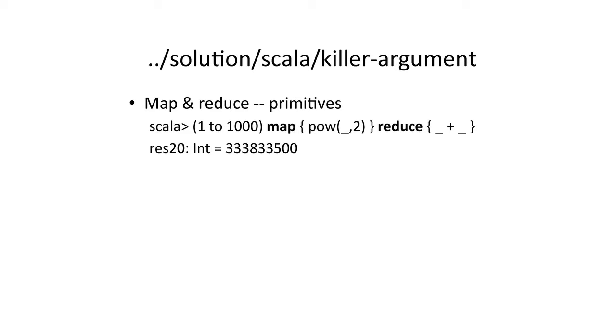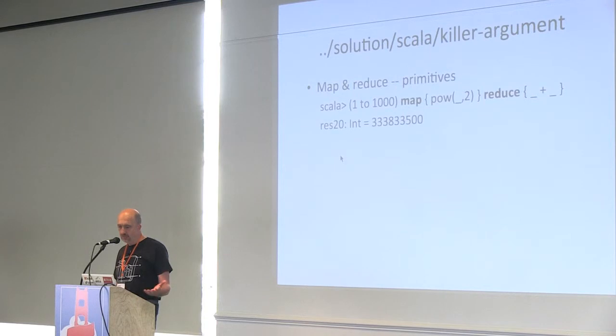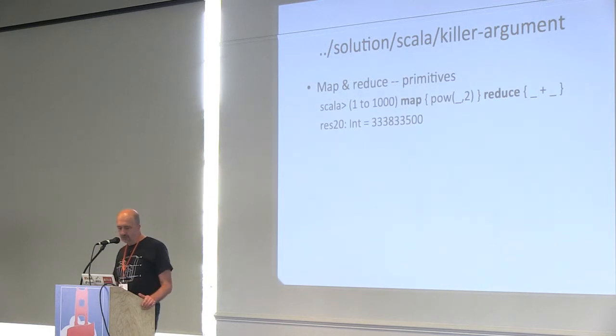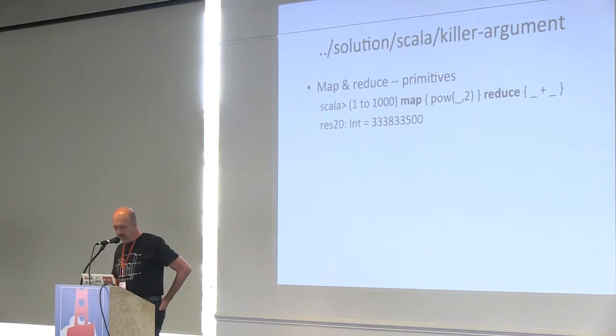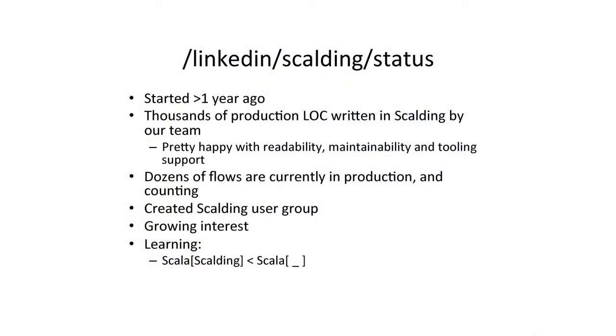The killer argument is: what's the best API for MapReduce? It's the one that has MapReduce primitives inside it — and basically this is valid Scala code that computes squares of numbers. It's kind of a joke, but it's nice to have MapReduce within the basic API. Right now, the way we use Scalding — a little more than a year ago we started writing jobs. We have thousands of production lines of code written and running in production, producing products that some of you are interacting with. We have dozens of flows and an internal Scalding users group, and we're trying to be active outside of that as well.